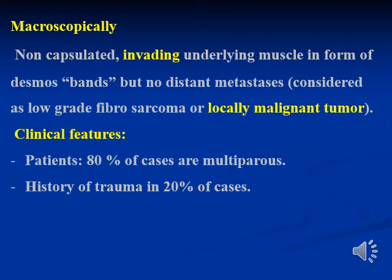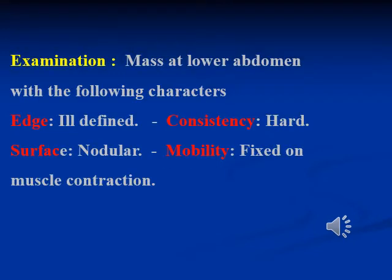Regarding clinical features, 80% of cases are multiparous women, and the other 20% give a history of abdominal trauma. On examination, we find a mass at the lower abdomen with defined edges, a nodular surface, hard consistency, and it is fixed on muscle contraction because it is invading the muscles of the anterior abdominal wall.